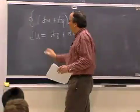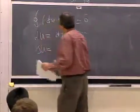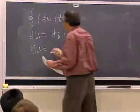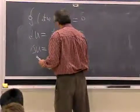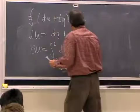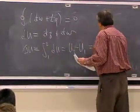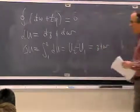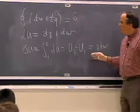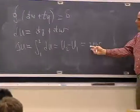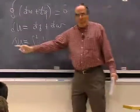So we can also write delta U as integral from 1 to 2 of dU. That's U2 minus U1, and it's Q plus W. So these two quantities, again, are path dependent. This is not. That's the first law of thermodynamics.